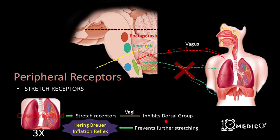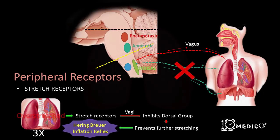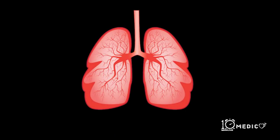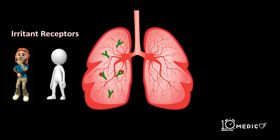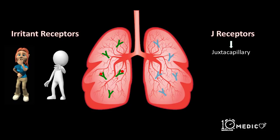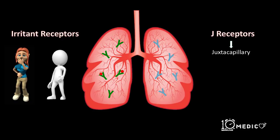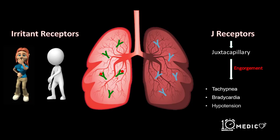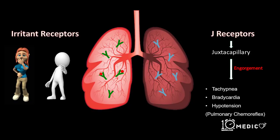The Hering-Breuer reflex is just a protective reflex and has no role in the regulation of normal respiration. There are other receptors such as irritant receptors which, when activated by irritants, cause coughing as well as sneezing. There are also J receptors or juxtacapillary receptors, which are in close proximity to the pulmonary capillaries. These are activated during pulmonary congestion due to congestive cardiac failure or pulmonary edema and cause tachypnea, bradycardia, and hypotension — together called the pulmonary chemoreflex.